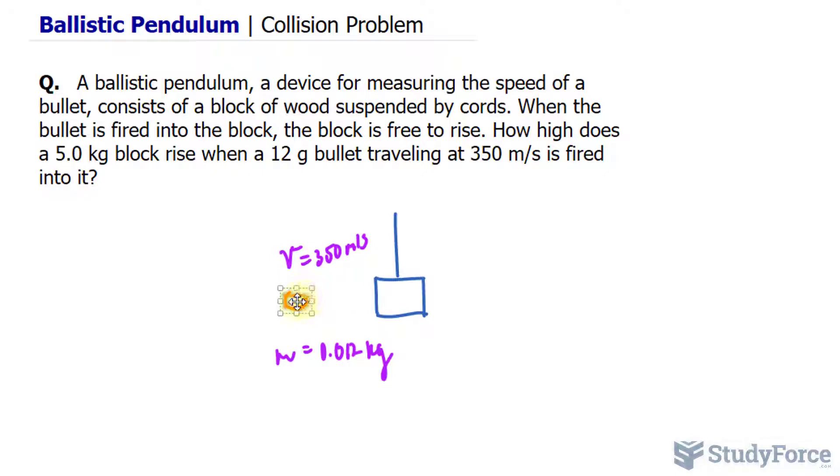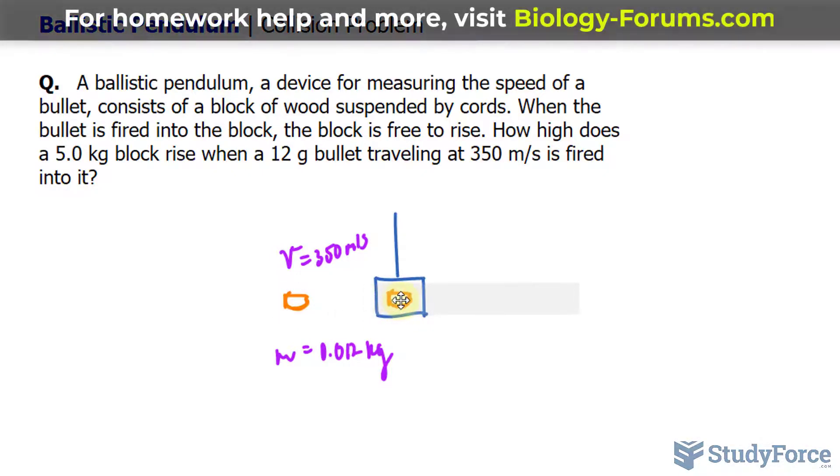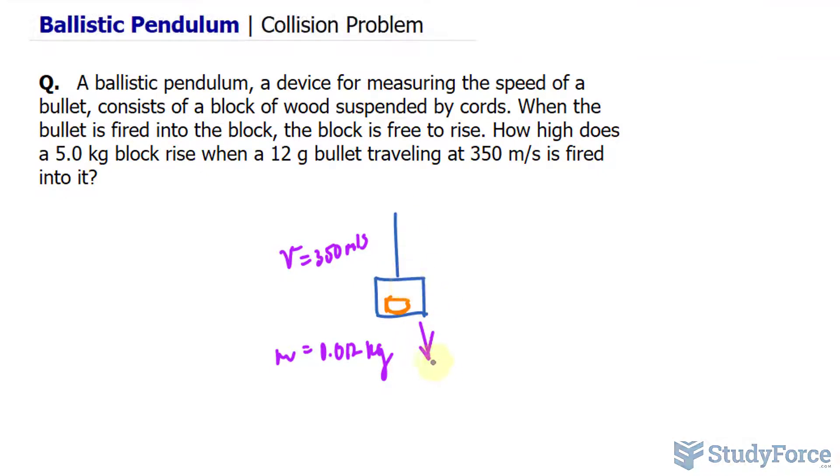Eventually, when this bullet hits the block of wood, they will have a combined mass. If I represent the mass of the block with capital letter M, and add that to the mass of this bullet, that's capital M plus little m. It has a velocity which we don't know, and I'll represent that with the capital letter V. And this will push it up a height, which we don't know, represented by capital letter H.